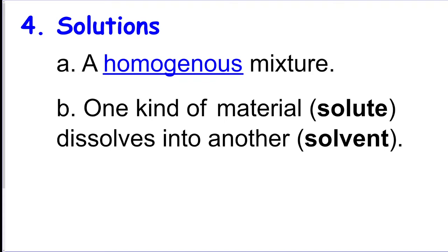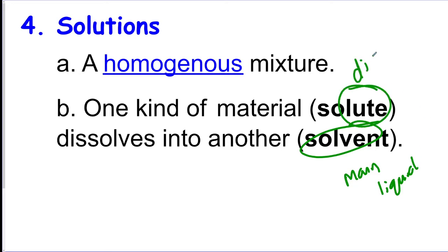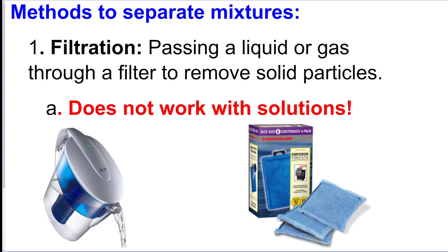In a solution there is a solute and a solvent. The solvent is the main liquid — it's the thing that does the dissolving. The solute is the thing that dissolves, or whatever you're stirring in. So the sugar would be the solute and your coffee would be the solvent.